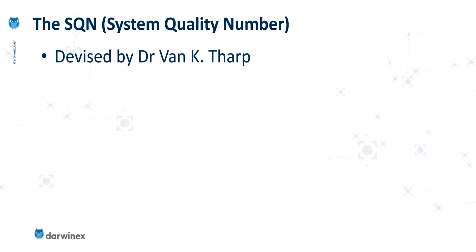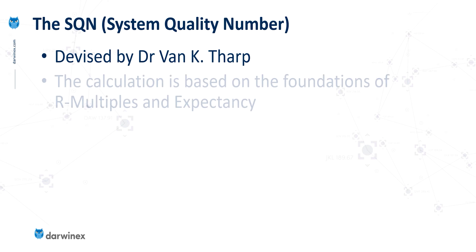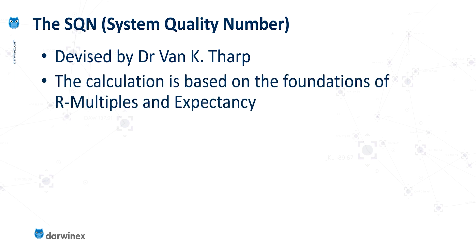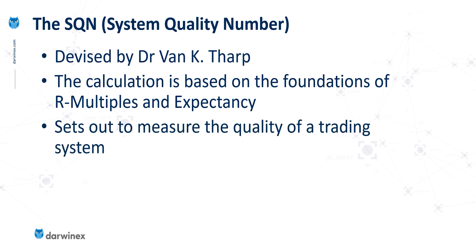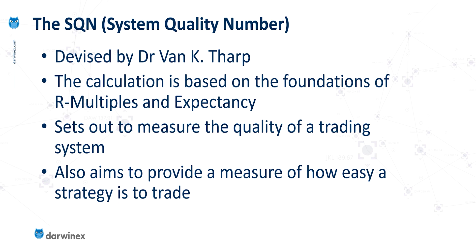The system quality number was devised by Dr. Van K. Tharp, and the calculation of this is based on the foundation components of R-multiple and expectancy, both of which Van Tharp also devised. The SQN specifically sets out to measure the quality of a trading system. Based on the type of trades and the distribution of those trades, it also aims to provide a measure of how easy it will be for a trader to trade that strategy.